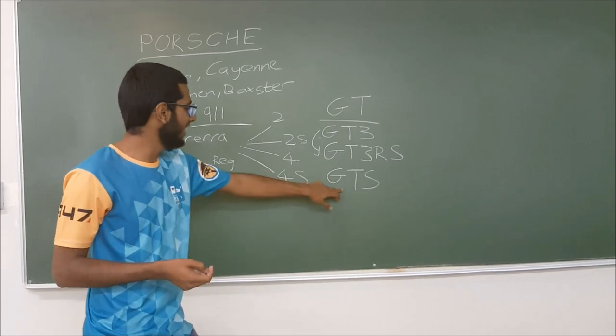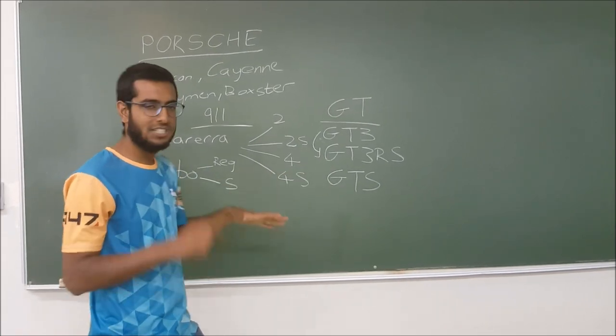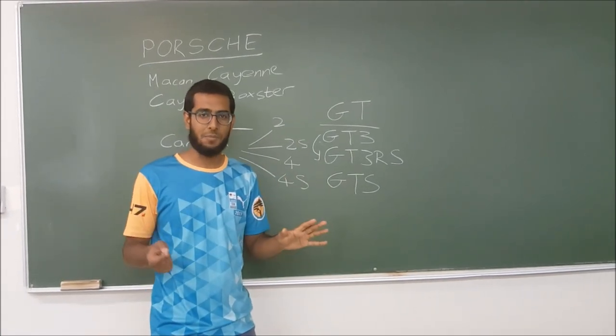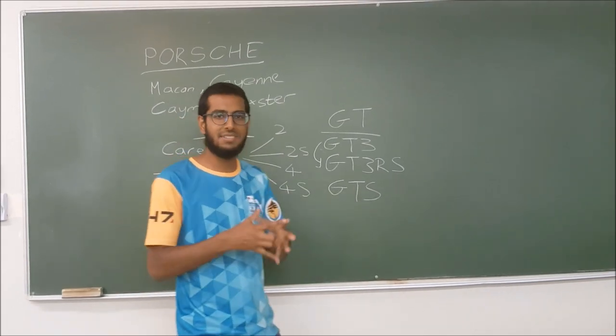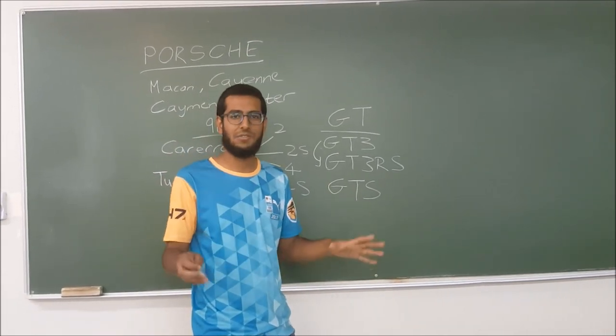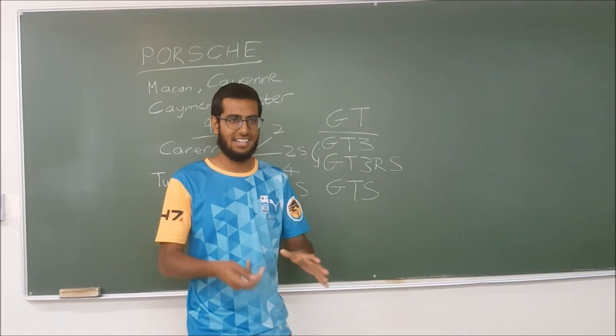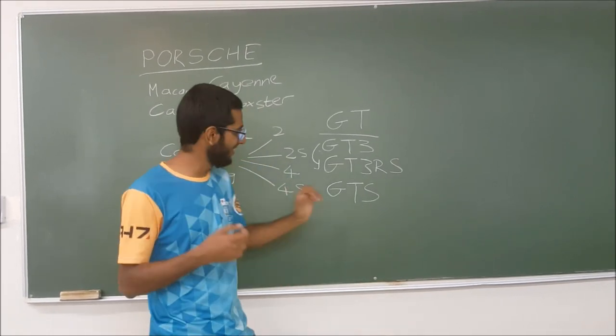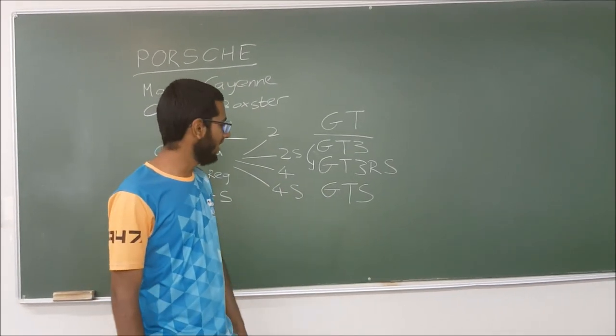And the GTS basically, you can make a GTS out of a 4S if you just tick the right option boxes. But the GTS comes as like a combo already, so you don't have to worry. Porsche decides that these are the best options so they put it in for you.